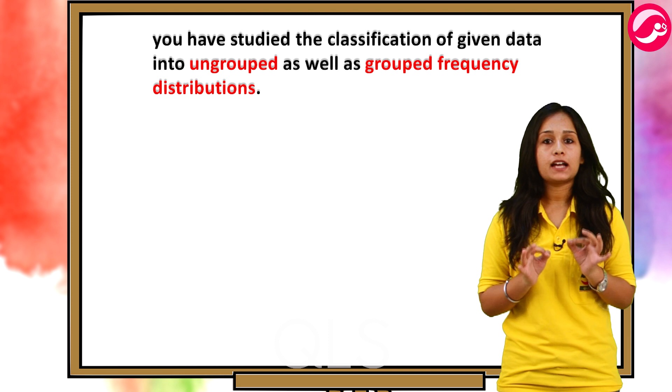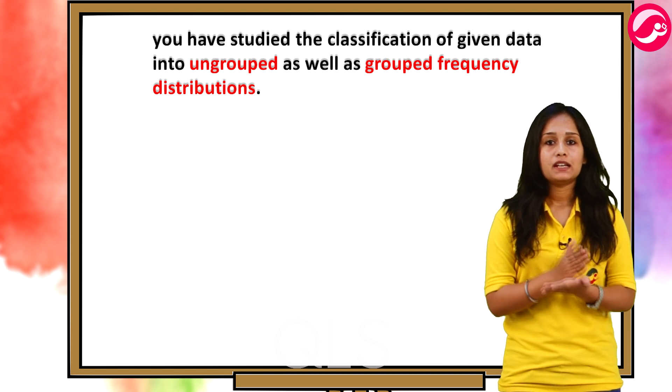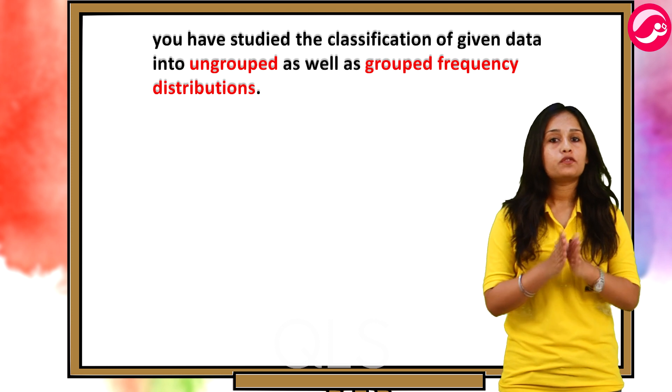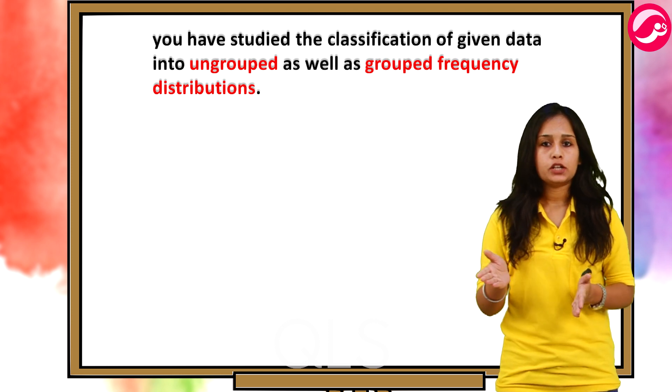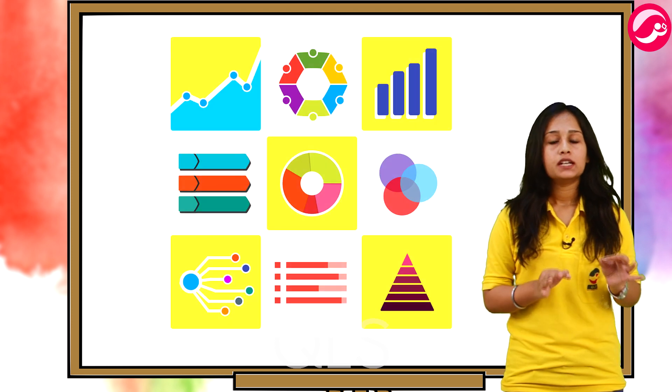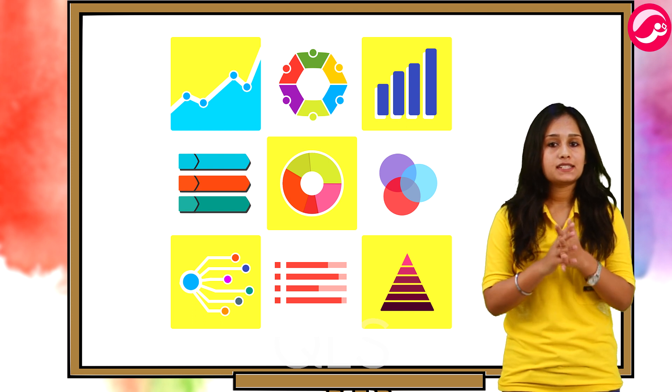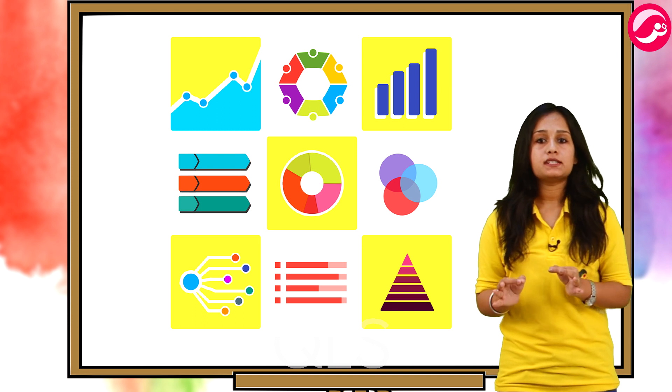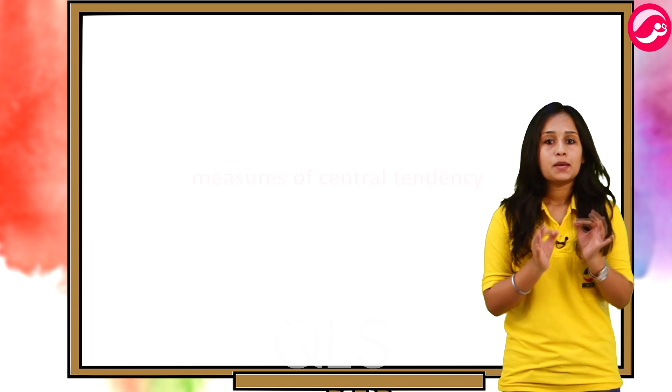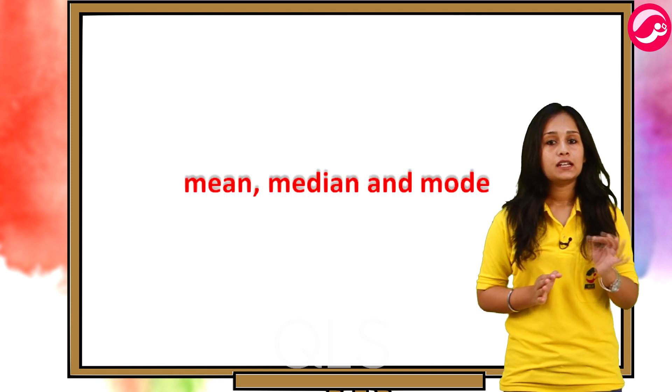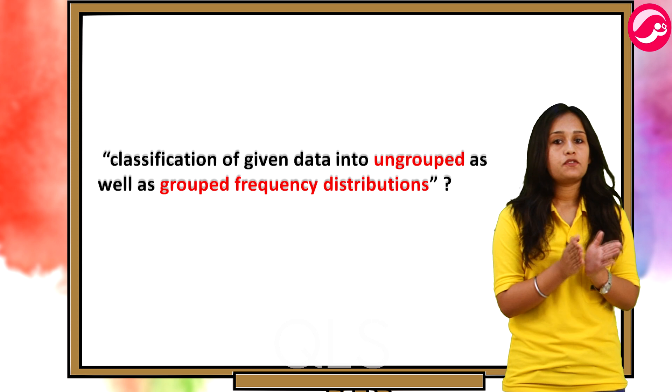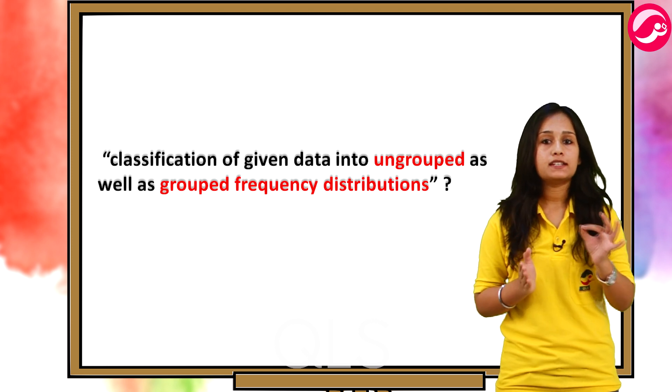Now in your previous class you have studied the classification of given data into ungrouped as well as grouped frequency distributions. You have also learned to represent the data, grouped or ungrouped, pictorially in the form of various graphs such as bar graph, histogram, including those of various widths and frequency polygons. In fact, you went a step further by studying certain numerical representatives of the ungrouped data also called measures of central tendency namely mean, median and mode.